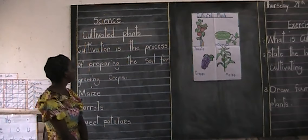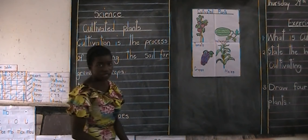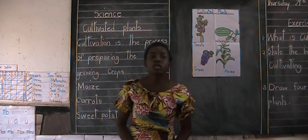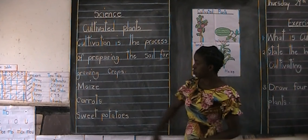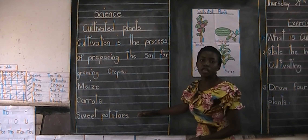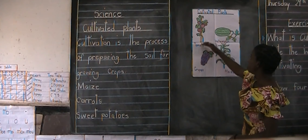So today in science we are looking at cultivated plants. We started by saying: what is cultivation? Cultivation is the process of preparing the soil for growing crops. We also looked at different types of examples for cultivated plants — we said mints, carrots, sweet potatoes, and others. Then we looked at the chart showing different types of cultivated plants: tomatoes, watermelon, mints, and grapes. This was Tita Waya and this video was brought to you by Fountain School. Thank you.